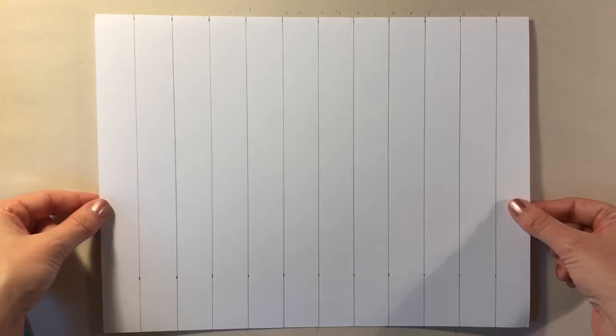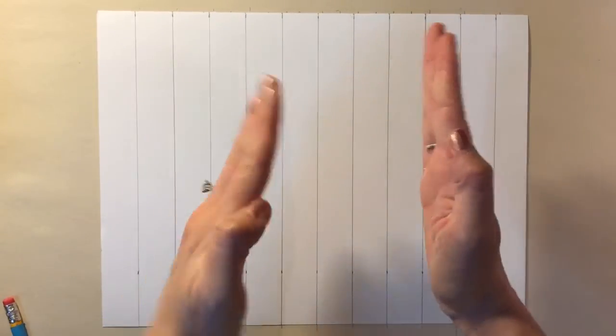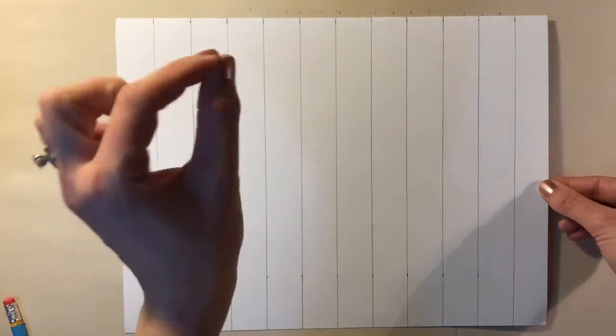When you get finished, you should have a nice neat row of lines. They should all look perfectly parallel to one another. You shouldn't have lines that are tilted or leaning; they should be perfectly matched up in one-inch increments.